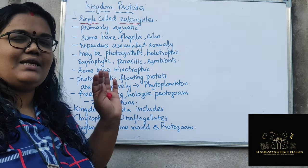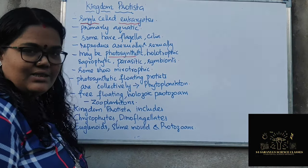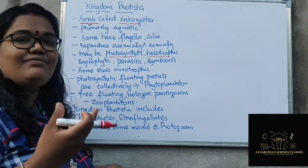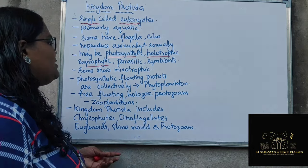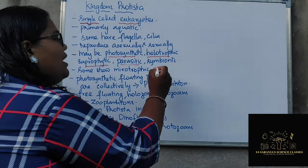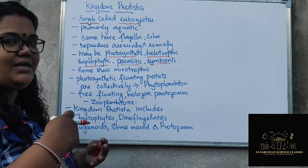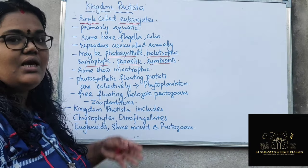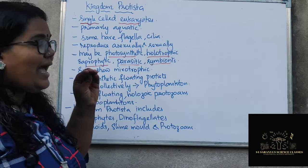The mode of nutrition in Protista is quite varied. Some are photosynthetic — they prepare their own food. Some are holozoic — they engulf food and digest it. Saprophytic forms depend on dead and decaying matter. Parasitic forms depend on a host. There are also symbiotic forms, where both the host and the parasite mutually benefit from each other.